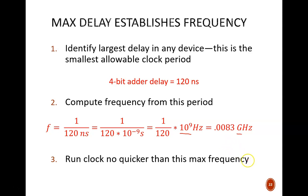Finally, we choose a clock frequency that is no higher than the computed frequency. Here, I rounded down from 0.0083 to 0.008 gigahertz. Then, I converted the metric prefix to make it easier to read as 8 megahertz.